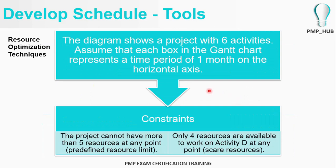Let's take the following example. It shows six activities and each box in the Gantt chart represents one month on the horizontal axis.